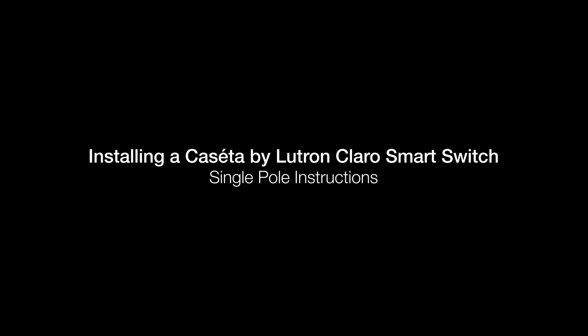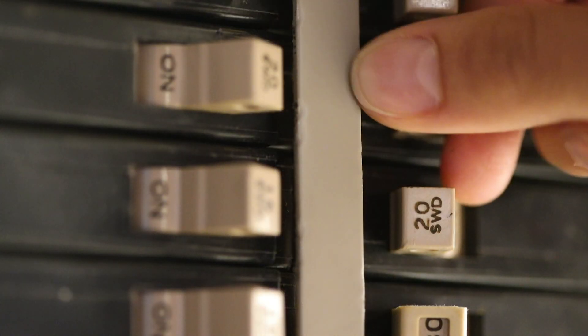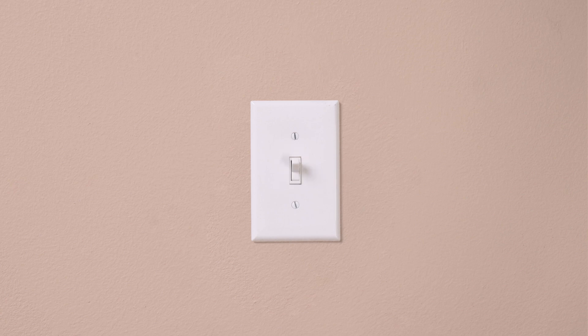Installing a Caseta by Lutron Claro Smart Switch is easy and takes as little as 15 minutes. First, turn the power off at the breaker. Double check to make sure the power is off.